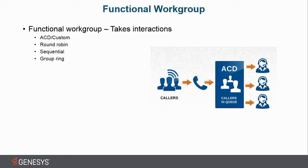Workgroups are divided into two different types of workgroups. The first of which is functional workgroups, the alternate being a logical workgroup. A functional workgroup effectively takes interactions. As you can see in the example over here, callers dial into the system, they go into the ACD function and the call is then routed for example to an agent.